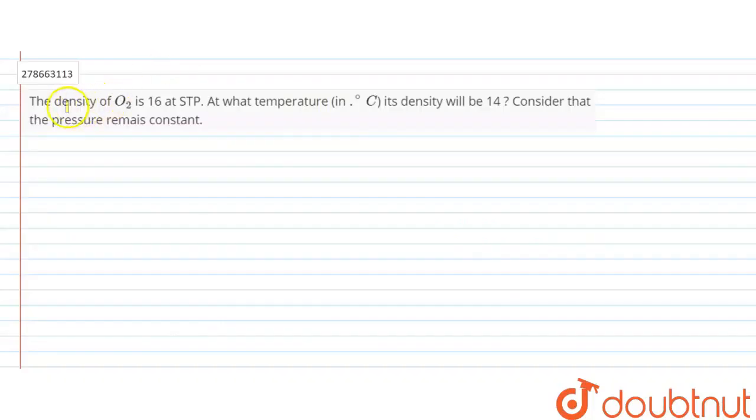Hello friends, you have a question. The density of oxygen is 16 at STP, standard temperature and pressure. At what temperature in degree Celsius will its density be 14? Consider that the pressure remains constant.